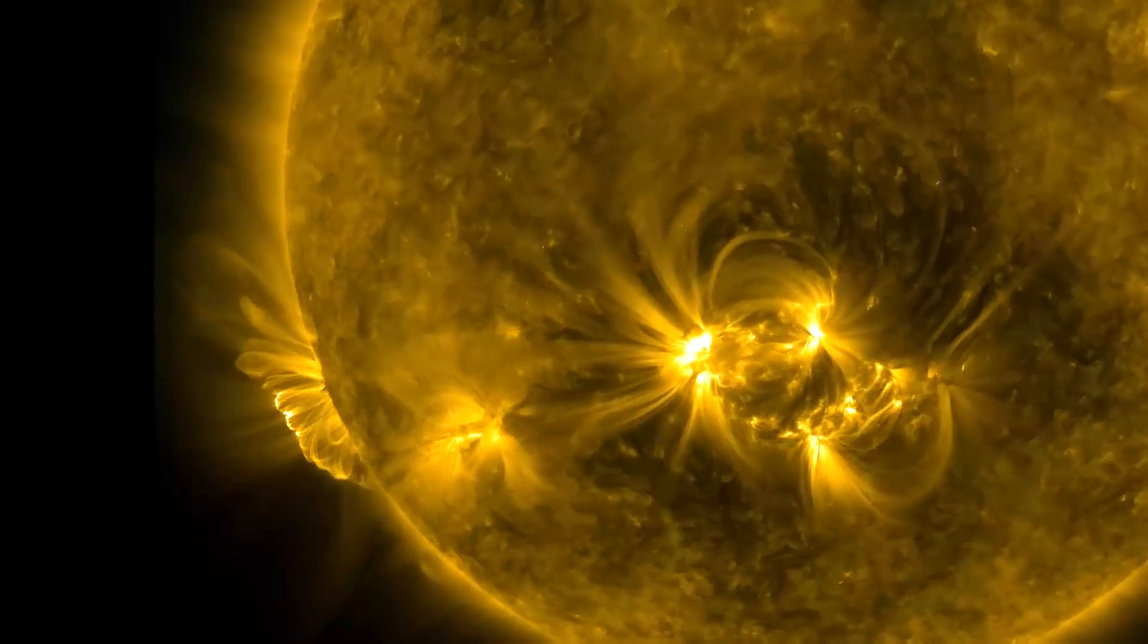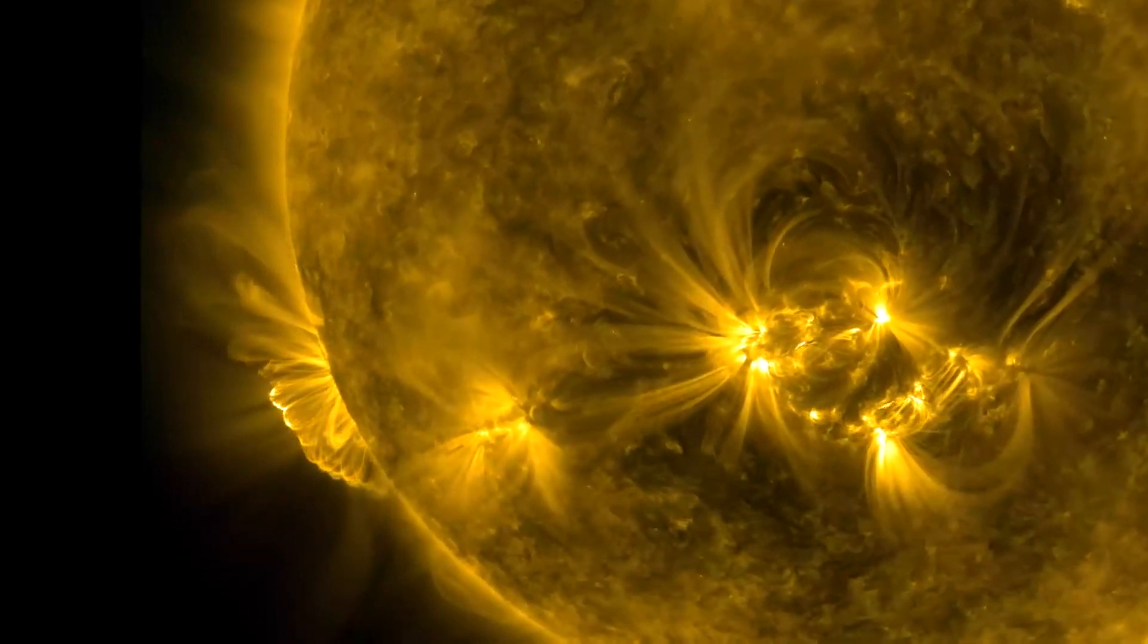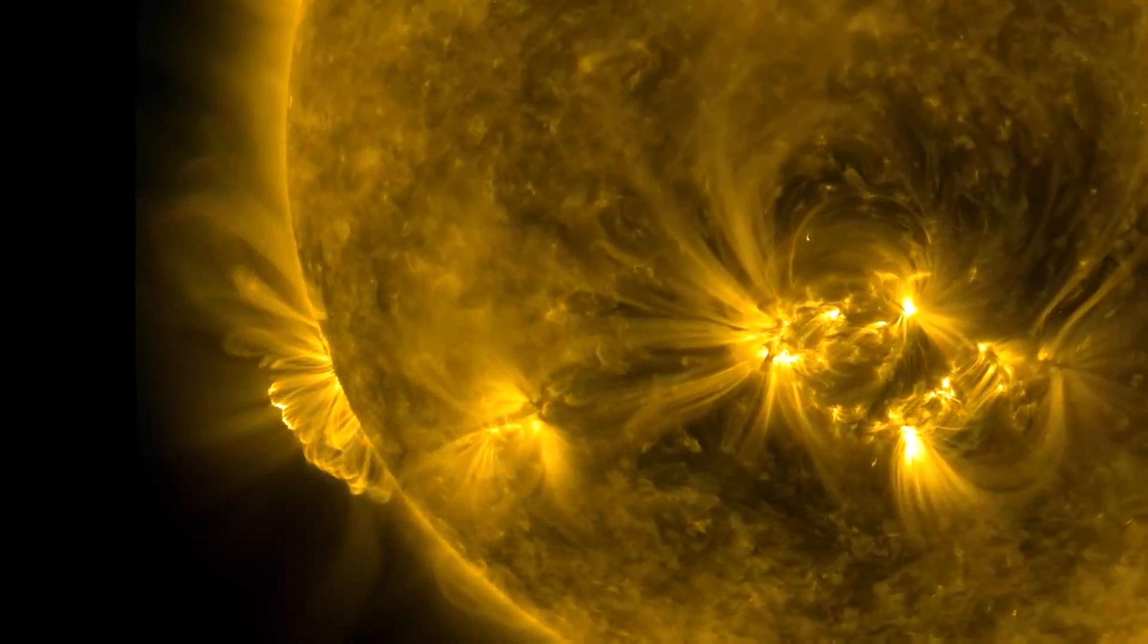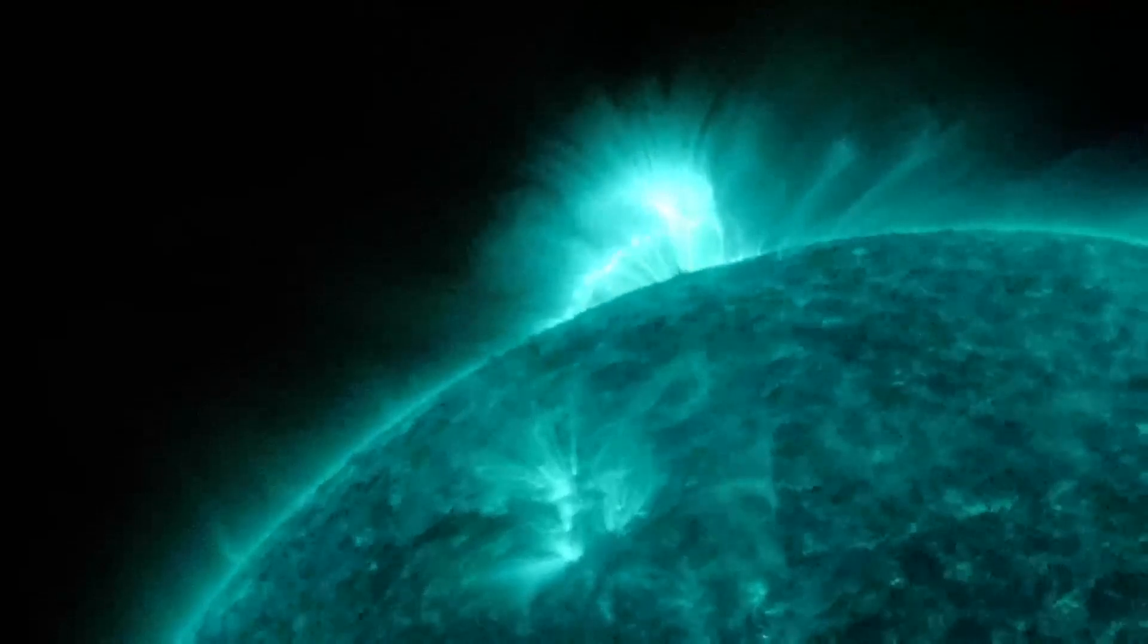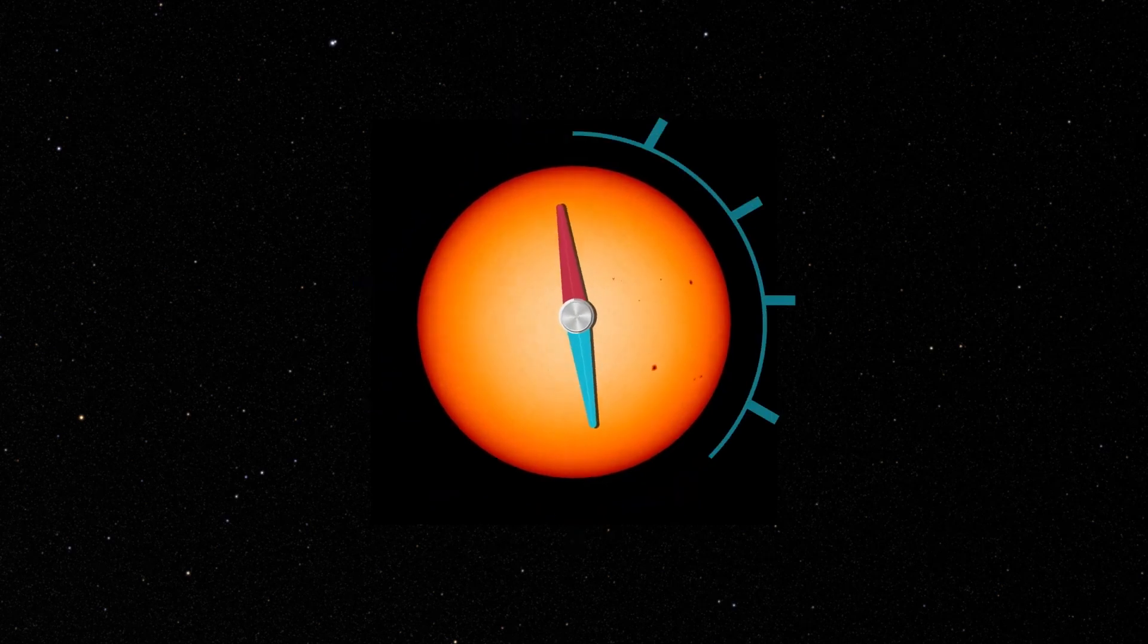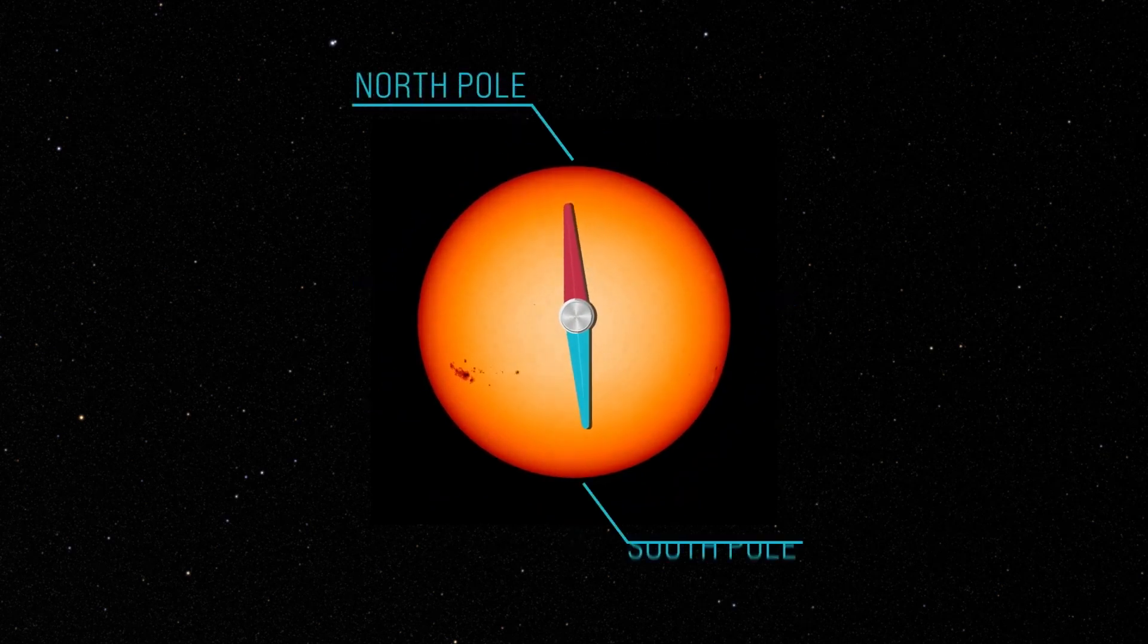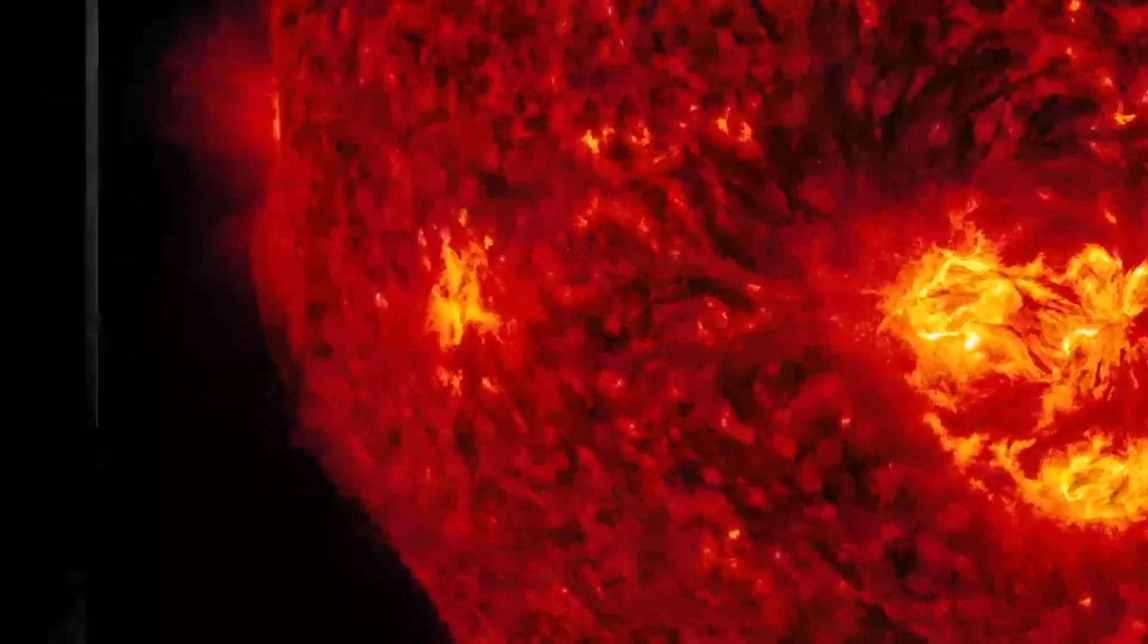The solar cycle is a natural cycle the Sun goes through as it transitions between low and high magnetic activity. Roughly every 11 years, at the height of the solar cycle, the Sun's magnetic poles flip. On Earth, that would be like the North and South poles swapping places every decade, and the Sun transitions from being calm to an active and stormy state.